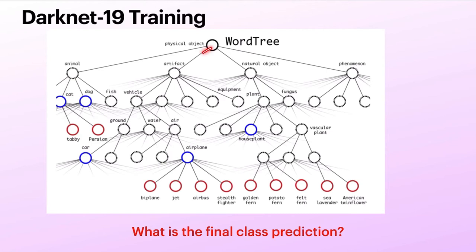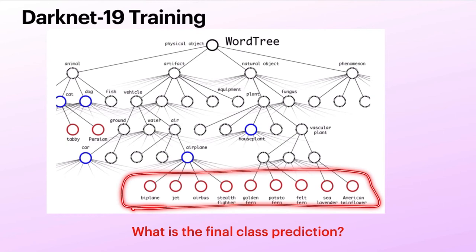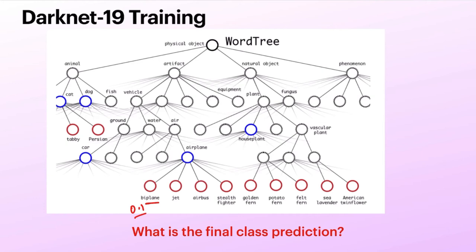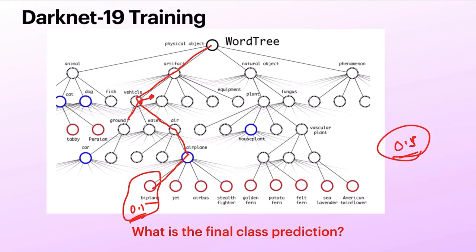Should you always consider the leaf node as the final class? No. For example, if you got a 0.1 confidence score for biplane, you cannot take that as your final prediction with only 10% confidence. So there should be some threshold on the confidence score. Let's say the threshold is 0.5. You compare at every node location — if the score is greater than 0.5, you proceed forward. If something is less than 0.5, you stop there and do not go further.